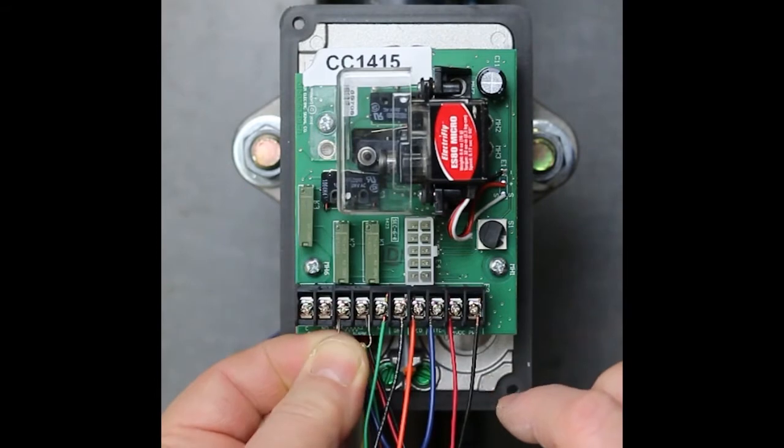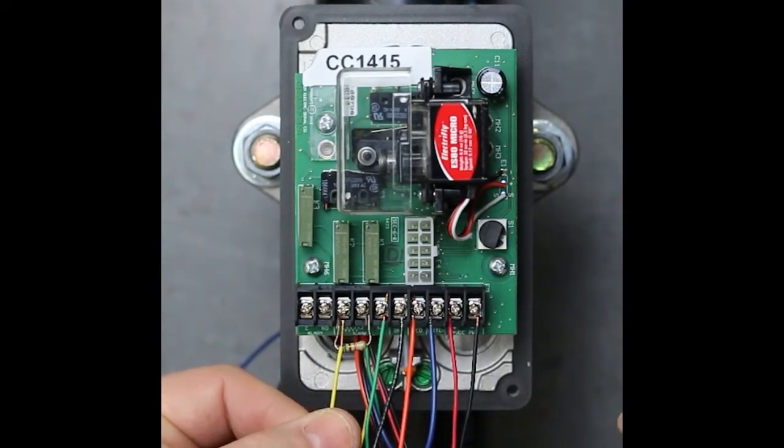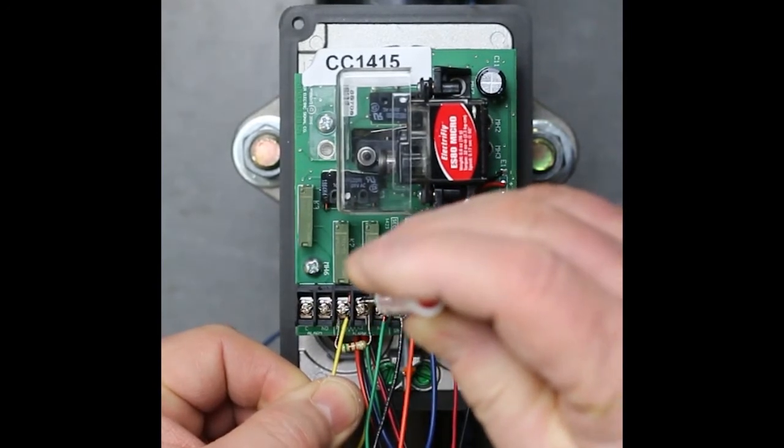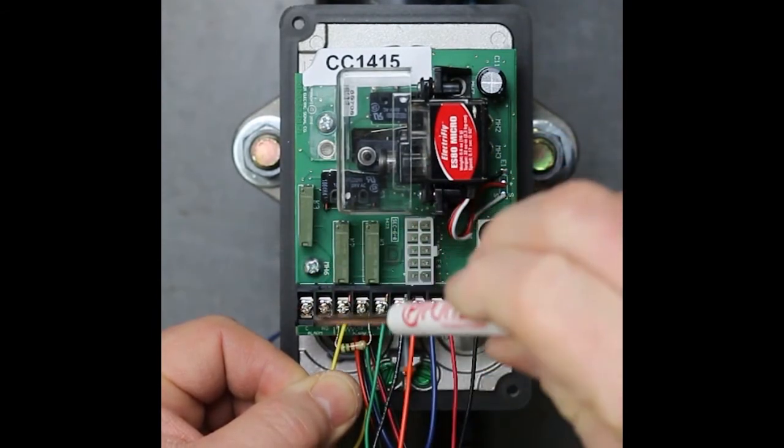The two wires from the fire alarm panel or addressable module connect to the terminals marked C and NO. The end of line resistor from the panel connects to the terminals where the resistor symbol is shown on the board, the C terminal and the one immediately to the right of it.